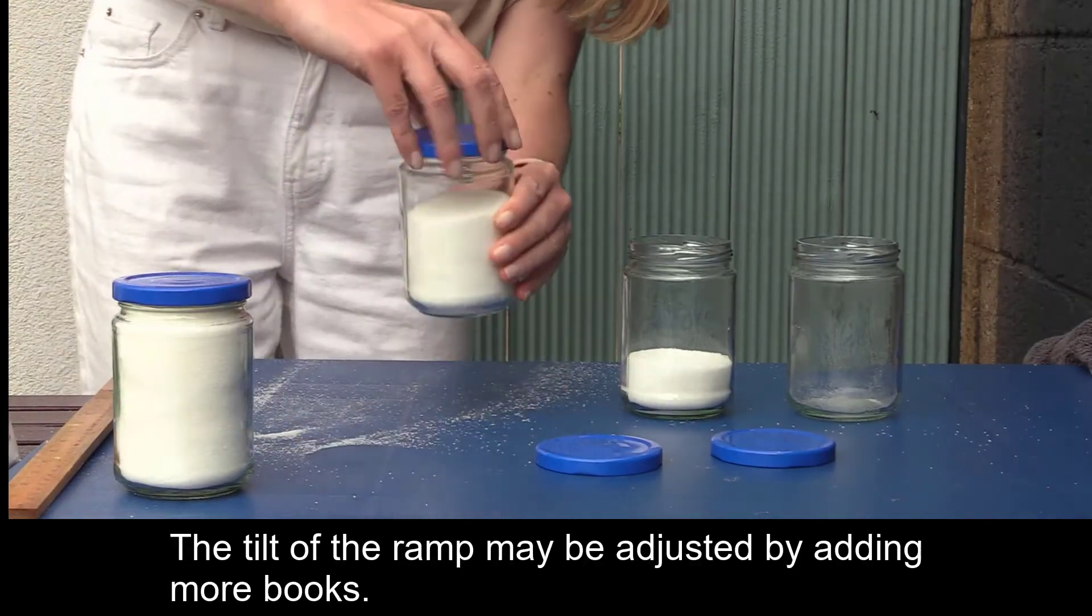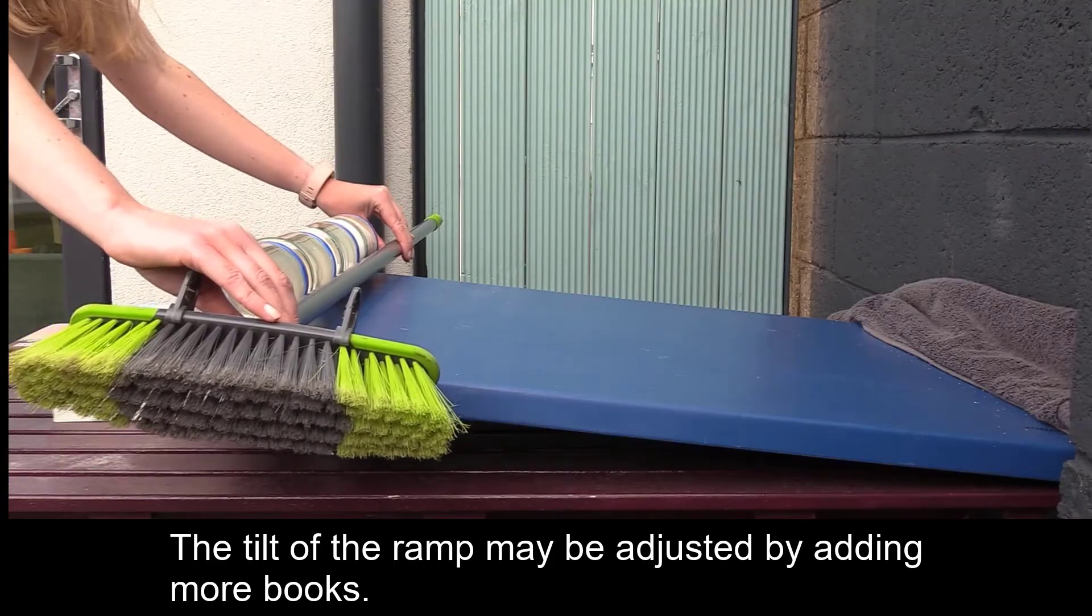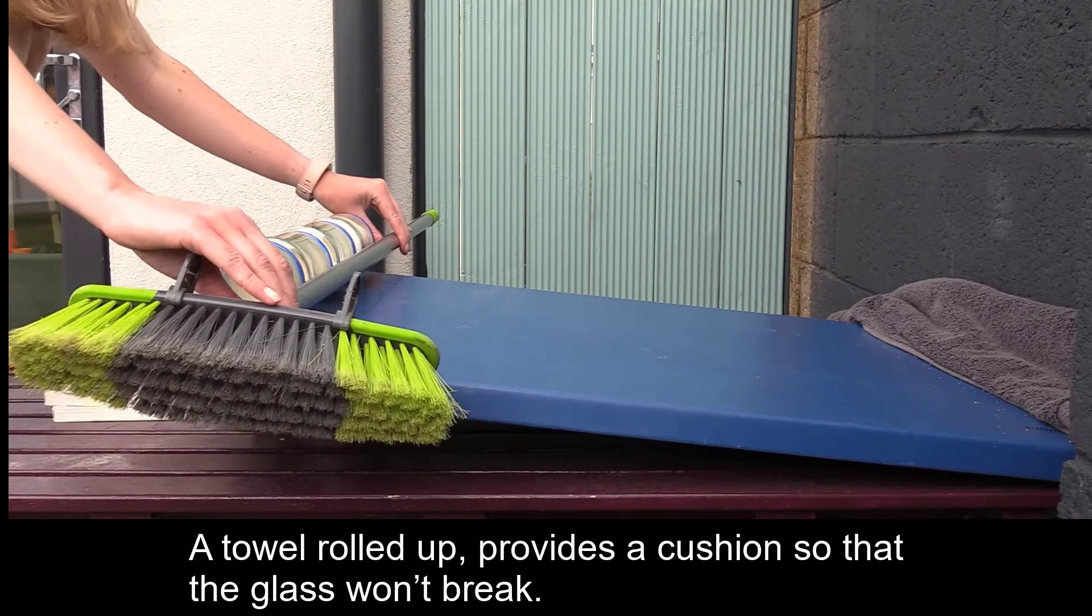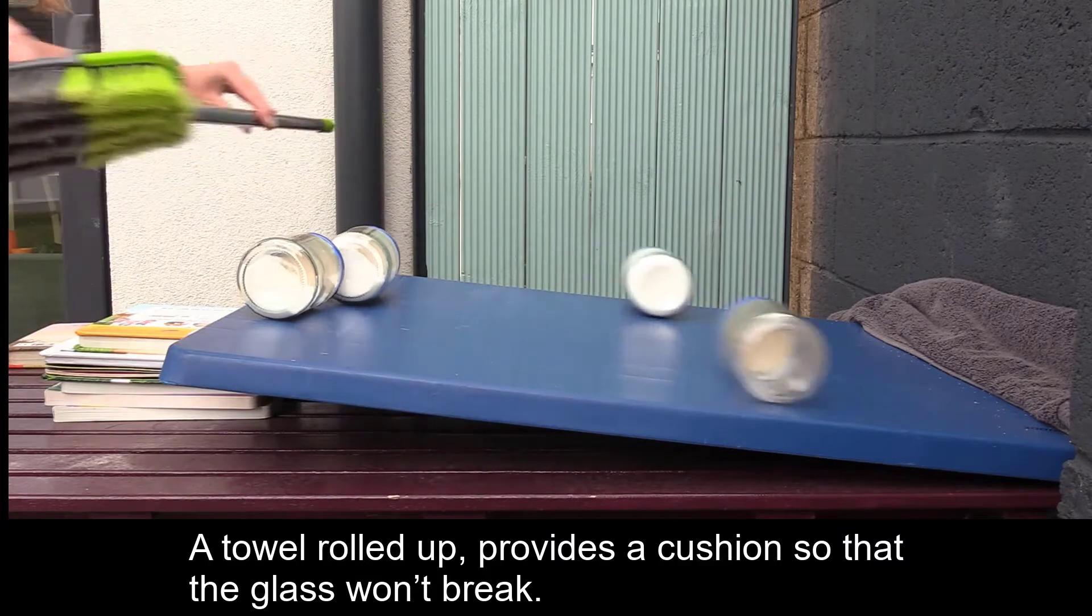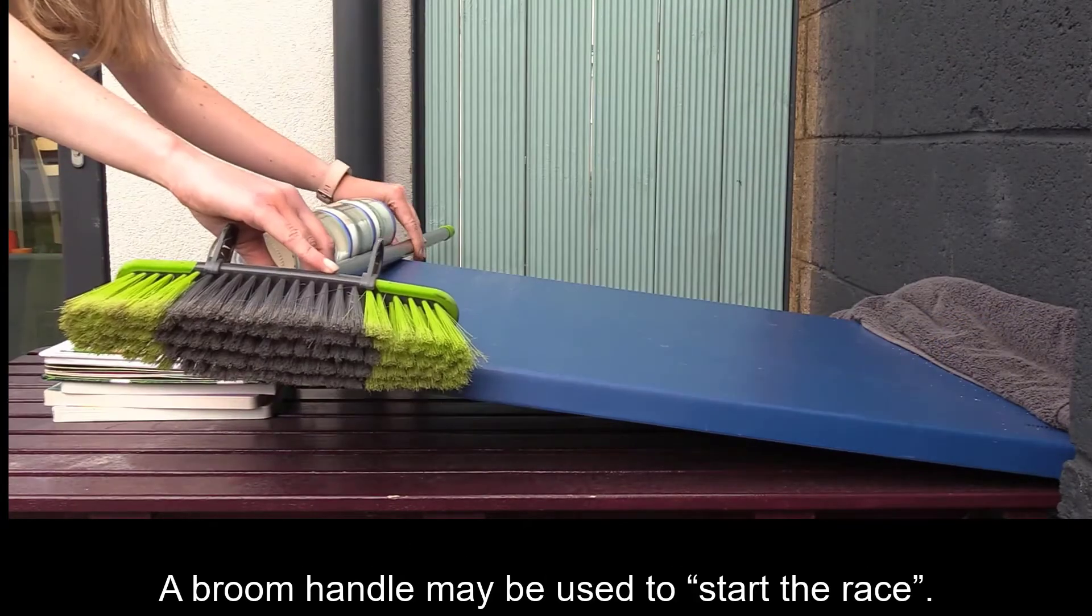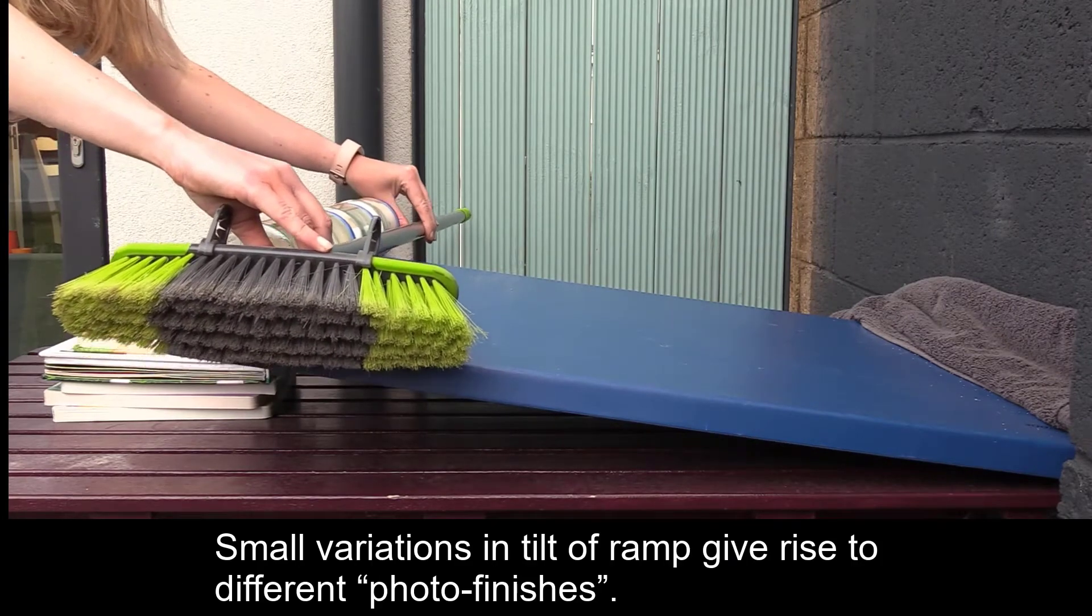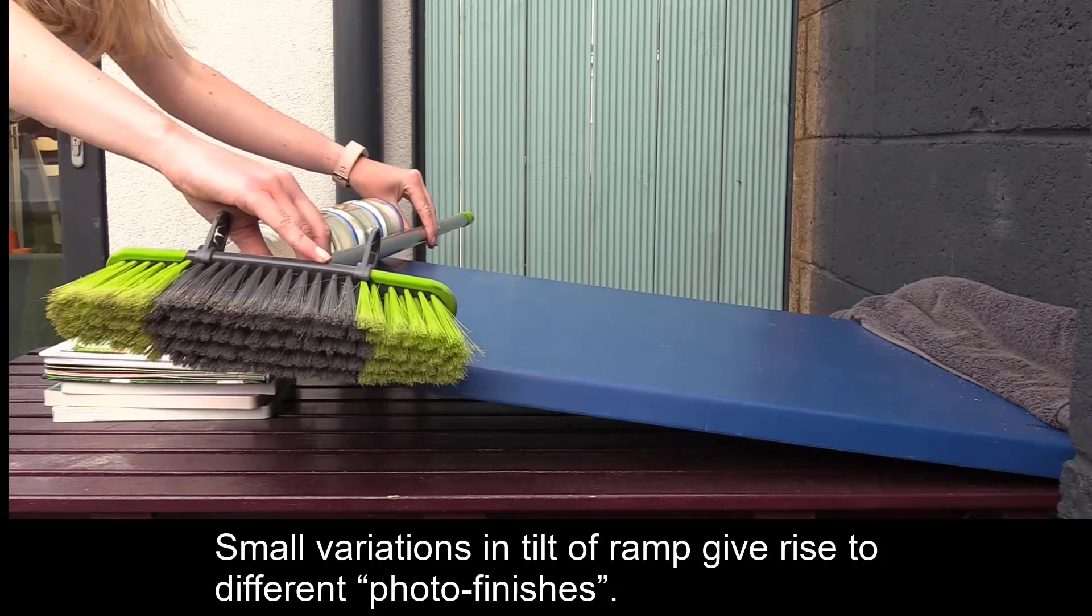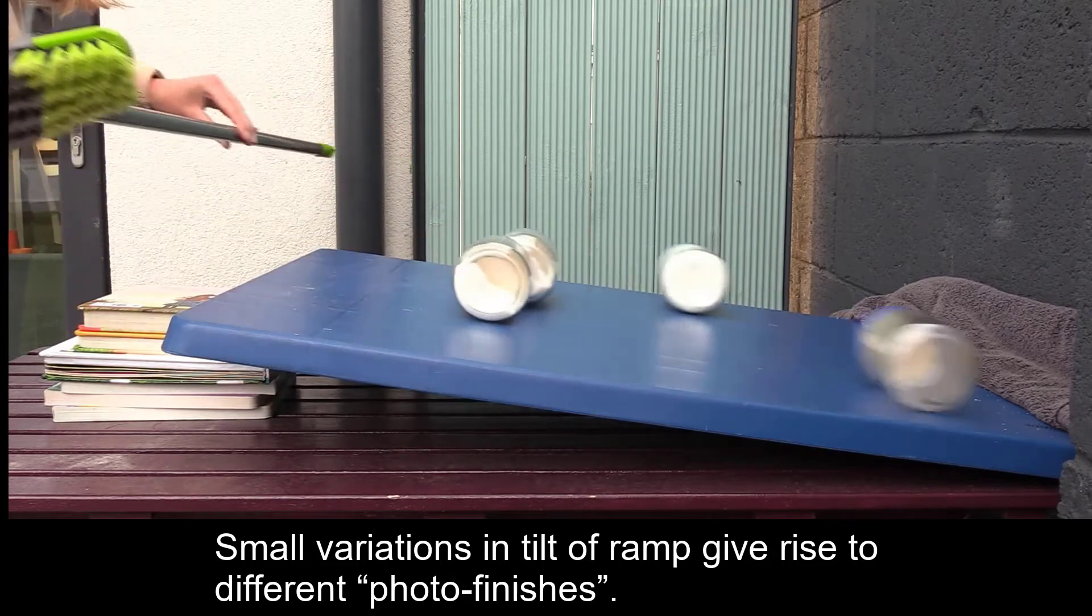The tilt of the ramp may be adjusted by adding more books. A towel rolled up provides a cushion so the glass won't break. A broom handle may be used to start the race. Small variations in tilt of the ramp gives rise to different photo finishes.